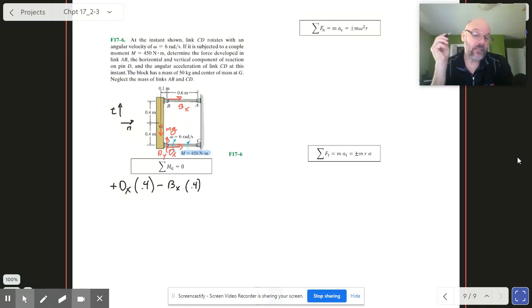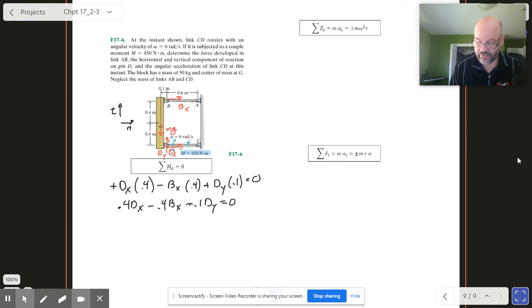But look out for Dy. Dy is offset from the center of mass, which means it's going to create a moment and it's going to create a positive moment. So we're going to have plus Dy and it's only a distance of 0.1 out there. So let me rewrite that just a little bit to clean it up: 0.4 Dx minus 0.4 Bx and then plus 0.1 Dy, and all that is equal to 0.